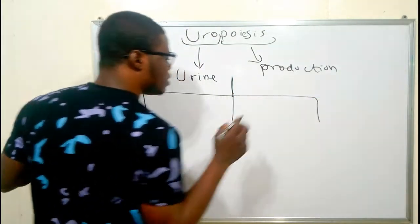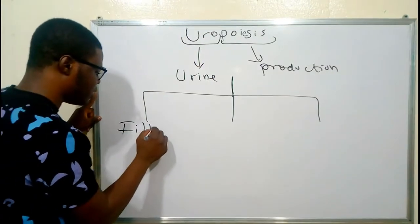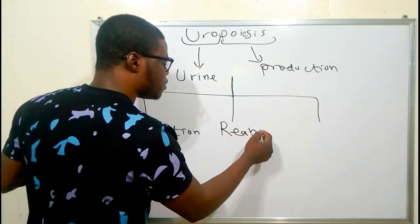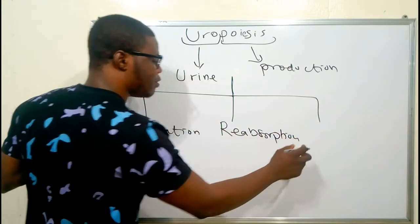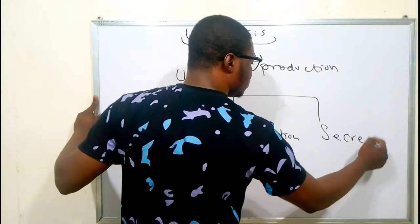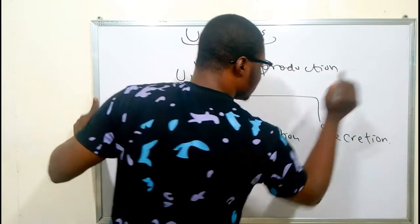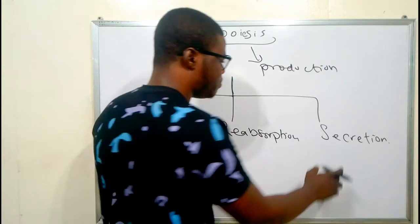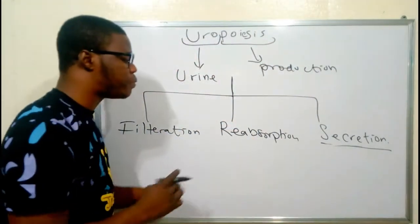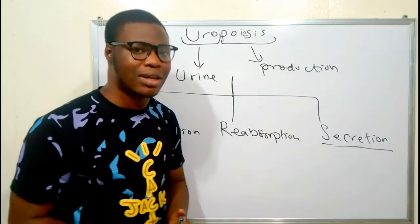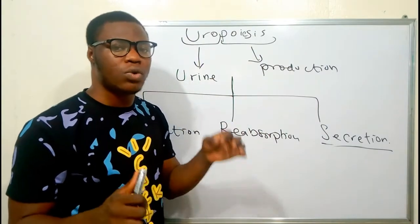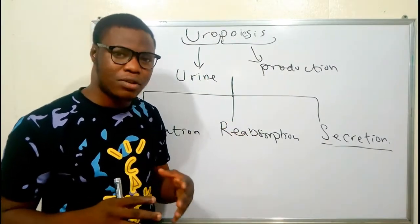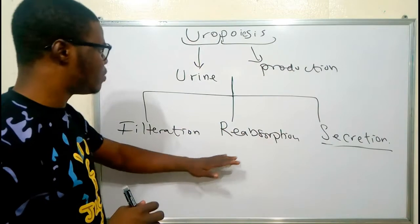The three stages are: the first one is called filtration, the second stage is called reabsorption, and the final stage is called secretion. Before we proceed, I would like to give you candid advice: if you are yet to watch our video on the nephron, I'm going to drop a link. Because if you don't understand the nephron, you are going to have a hard time understanding uropoiesis.